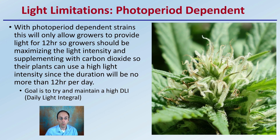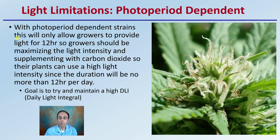Now, light limitations with photoperiod dependent plants. Photoperiod dependent strains will only allow growers to provide 12 hours of light, so they should use maximum light intensity and supplement with carbon dioxide. The goal is to try to maintain a high DLI — daily light integral. Because you're reducing the duration of light, increasing the intensity is advised. Carbon dioxide enrichment for indoor locations will allow plants to utilize a greater percentage of that higher intensity light.